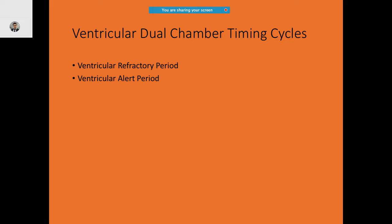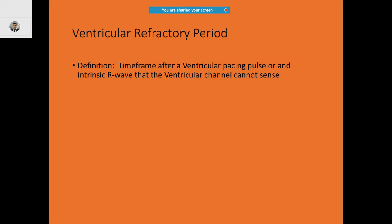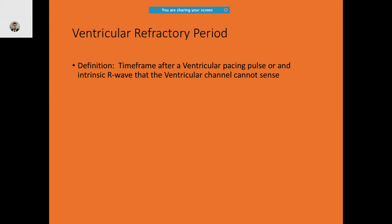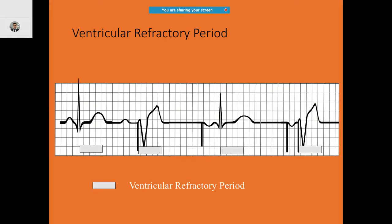Ventricular dual-chamber timing cycles include the ventricular refractory period, ventricular alert period, and the V-to-A cycle. The ventricular refractory period is defined as the time frame after a ventricular pacing pulse or an intrinsic R wave during which the ventricular channel cannot sense. For example, during the first beat with an inherent QRS, the channel cannot sense during this period — which makes it a bit tricky.